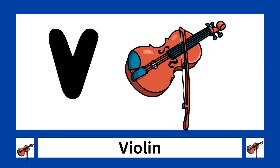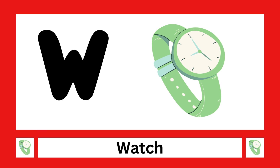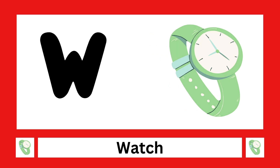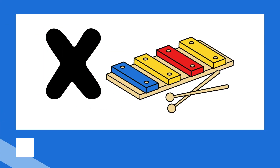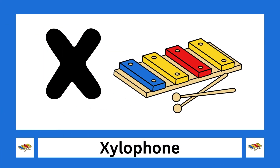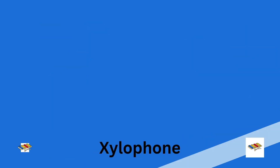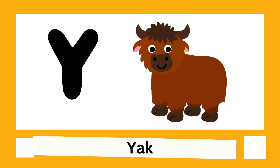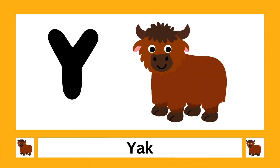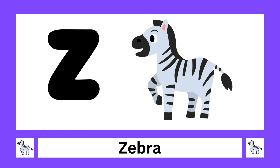V is for violin, W is for watch, X is for xylophone, Y is for yak, Z is for zebra.